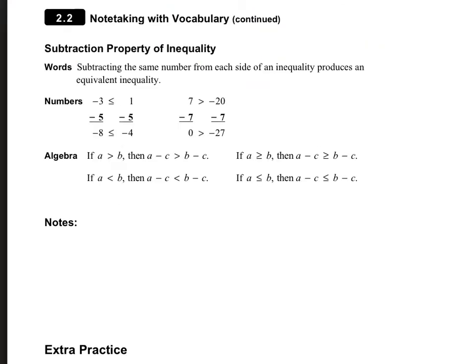On the next page, we see that the subtraction property of inequality is also true, and it works the same way. So if you start with something that's true, in this case, negative 3 is less than or equal to 1, and you subtract the same amount on both sides of the inequality, then what you end up with is also a true statement. So here we have if a is greater than b, if you subtract the same amount on both sides of the inequality, then it's still a true statement. For greater than, less than, greater than or equal to, or less than or equal to, it's going to work.